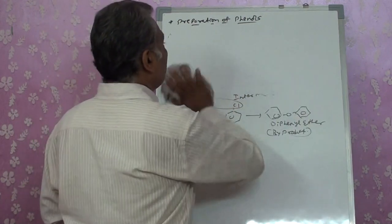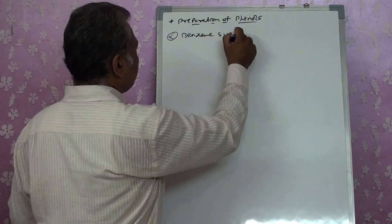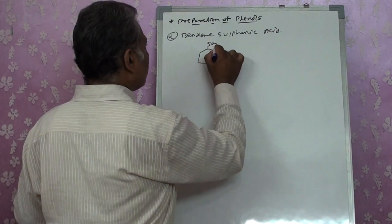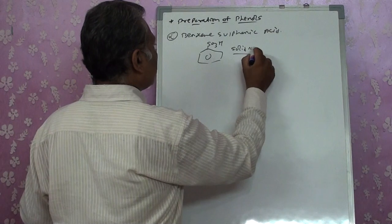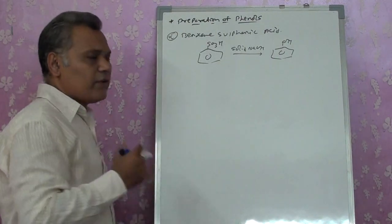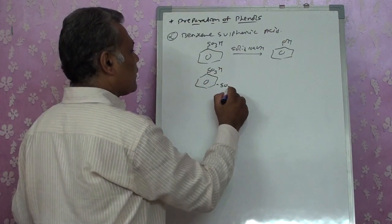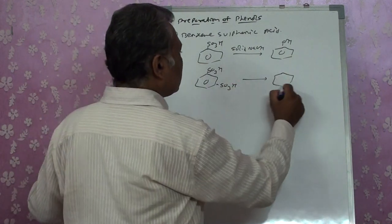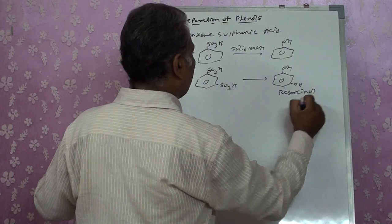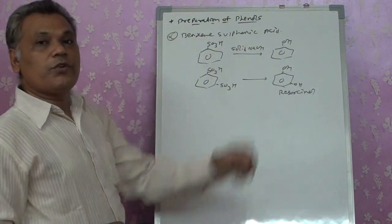The second method for preparation of phenols is through benzene sulfonic acid. A benzene ring with an SO₃H group is reacted with solid NaOH to get converted into phenol. Whatever number of SO₃H groups are present — for example, if SO₃H is present at the first and third positions — we get resorcinol. So SO₃H with solid NaOH gets converted into the OH (phenolic) group.